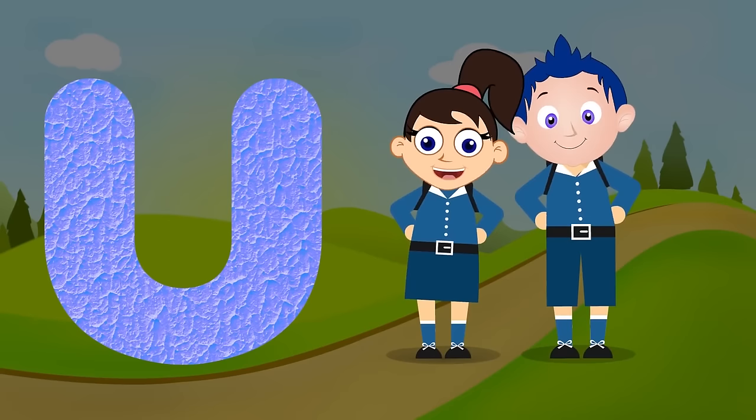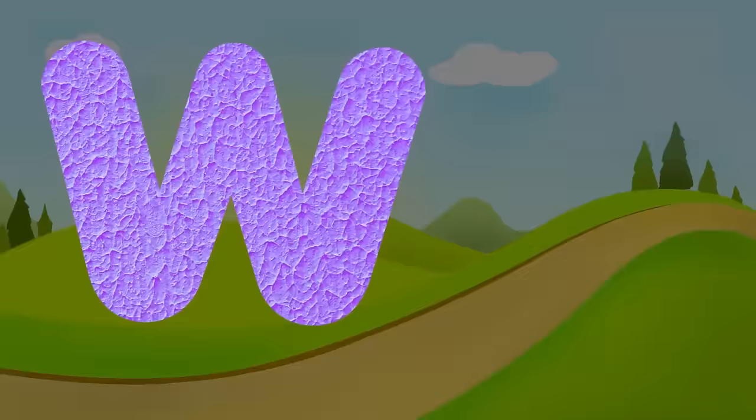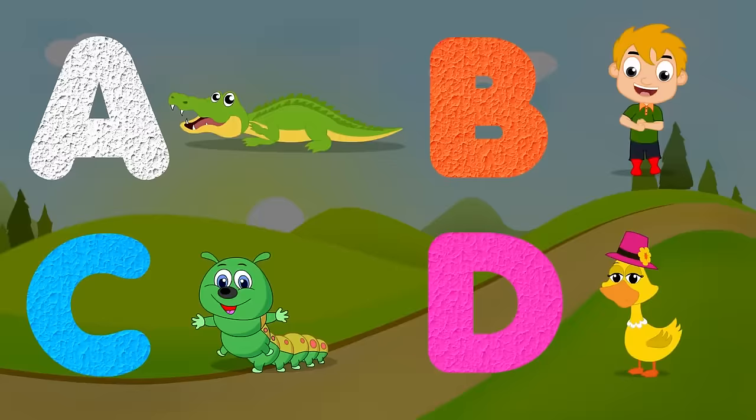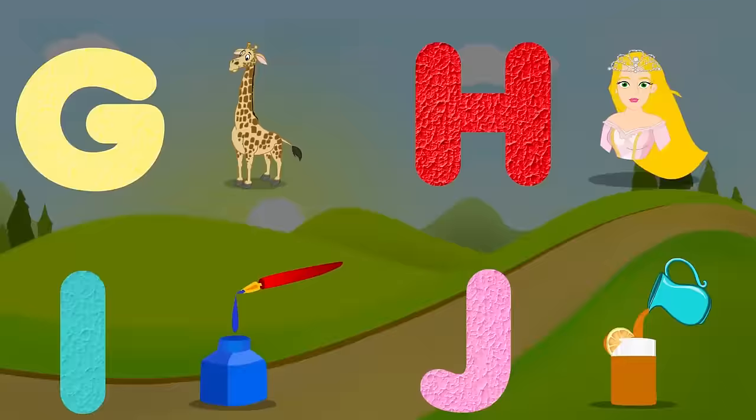U for uniform, u-u-uniform. V for violin, v-v-violin. W for wheel, w-w-wheel. X for x-rox, z-z-z-rox. Y for yam, y-y-y-yam. Z for zip, z-z-zip.